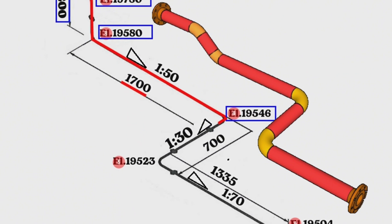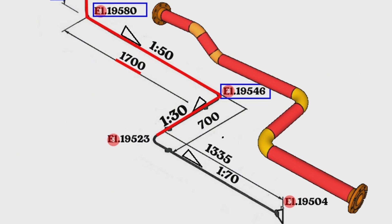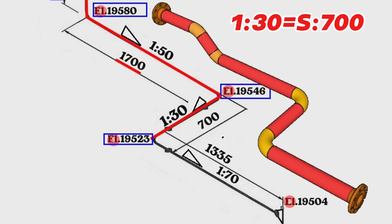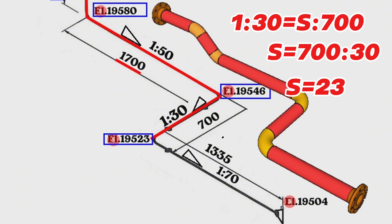At this point the pipeline turns with a 90-degree elbow to the west direction and travels for a length of 700 millimeters. The slope symbol ratio in this part of the pipeline is 1:30, meaning that for every 1 unit of vertical elevation there are 30 units of horizontal distance. 1:30 equals S over 700, or S equals 700 divided by 30. Calculated and found approximately S equals 23 millimeters. This means the height of the pipeline drops by 23 millimeters over a distance of 700 millimeters.